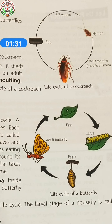There are three stages in the life cycle of a cockroach: egg, nymph, and adult cockroach.